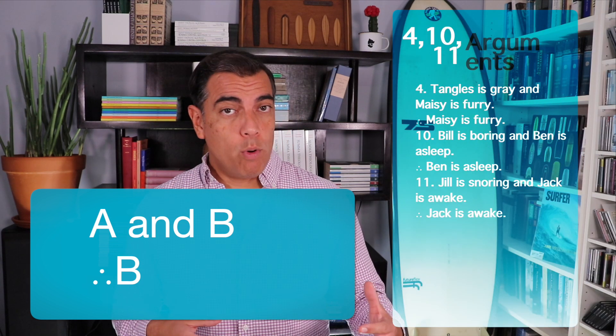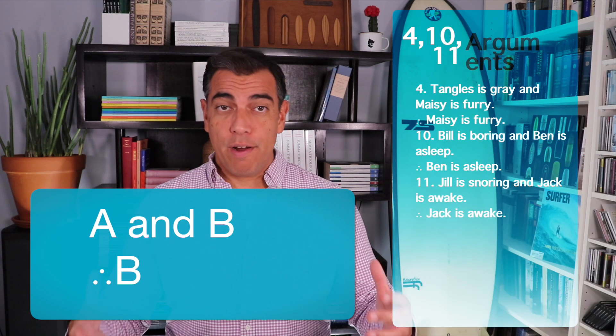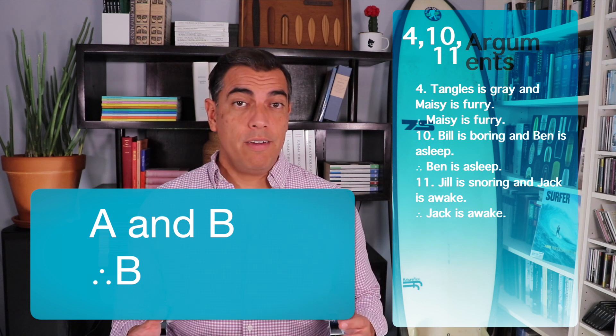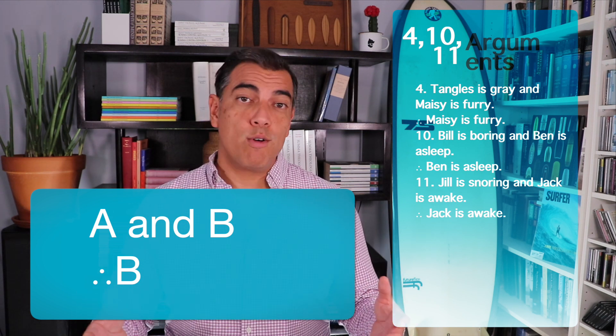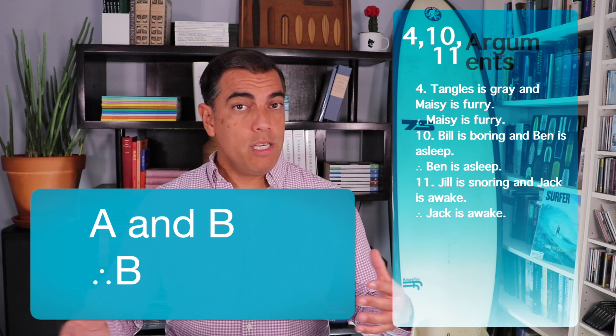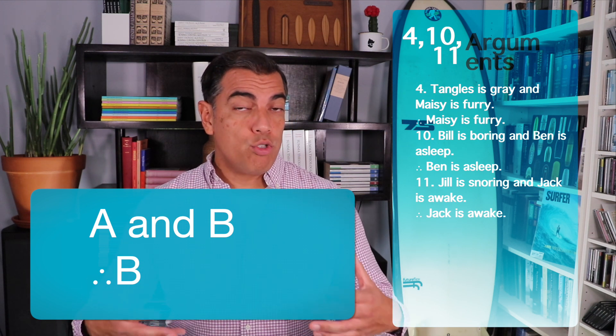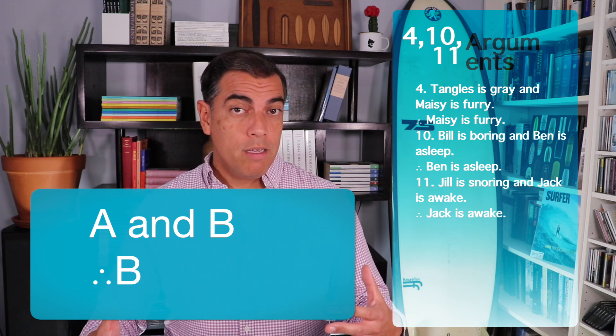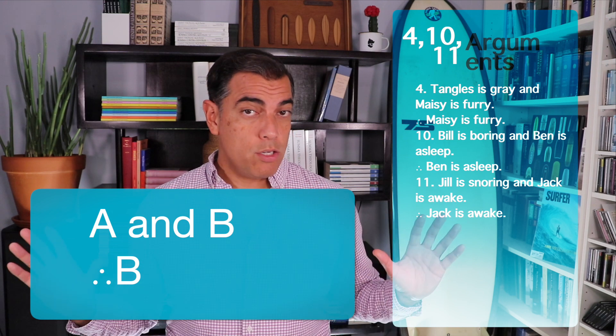Arguments four and five were NTP due to the structure — A and B, therefore B — and we could substitute whatever we wanted and still get valid arguments. For example, argument 10: Bill is boring and Ben is asleep, therefore Ben is asleep. Argument 11: Jill is snoring and Jack is awake, therefore Jack is awake. These two arguments share the same structure as four and five, so they're also valid just based on structure.